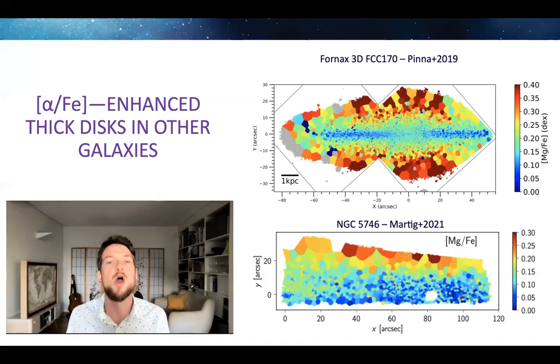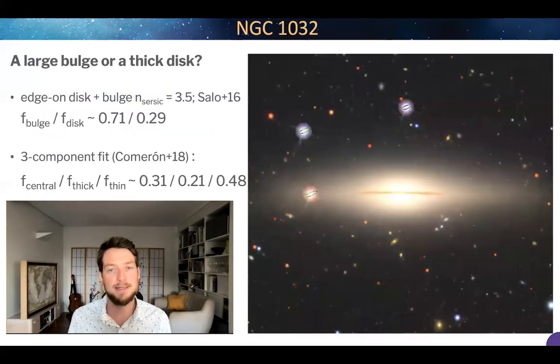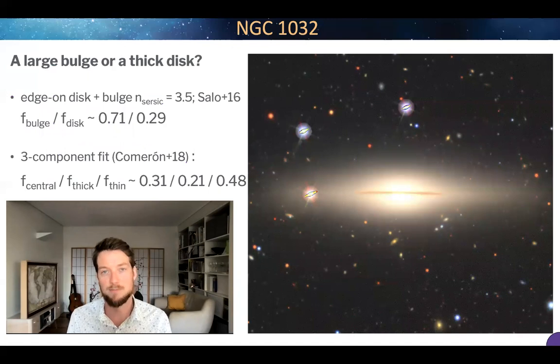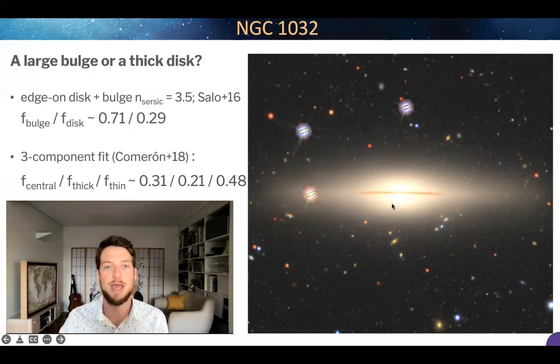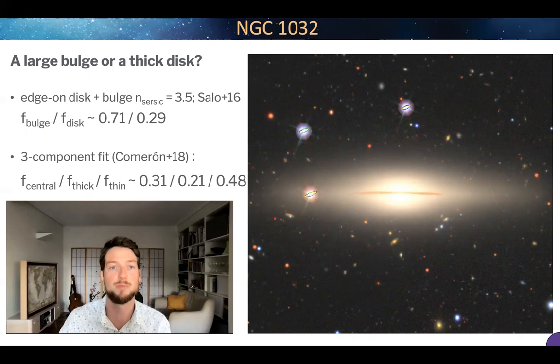But now you might think, I've been talking about thick disks, alpha-rich disks. How does this relate to the formation of bulges? And to make that link, I'm going to show this galaxy right here, NGC 1032. It has a similar stellar mass as our Milky Way, yet it looks like it has a much bigger bulge than our own galaxy. And indeed, when you do a two-component fit with an n-Sérsic disk plus a bulge component, where n equals 3.5, you indeed find that most of the light gets attributed to the bulge, 71% versus 29% in the disk.